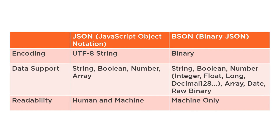When people start using MongoDB, they often get confused about BSON. There is no need to worry — BSON conversion is automatically handled by MongoDB. You only need to focus on preparing the JSON object. MongoDB takes care of converting it into BSON and storing it. Just keep in mind that MongoDB uses BSON internally, but you work with JSON.